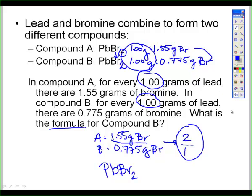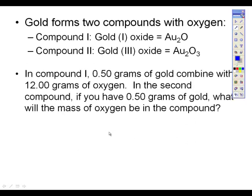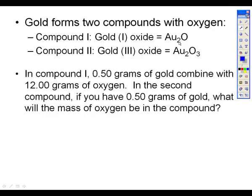Let's do another one. Gold forms two compounds with oxygen. Compound 1 is gold (I) oxide with this formula. Here's gold (III) oxide, it says.